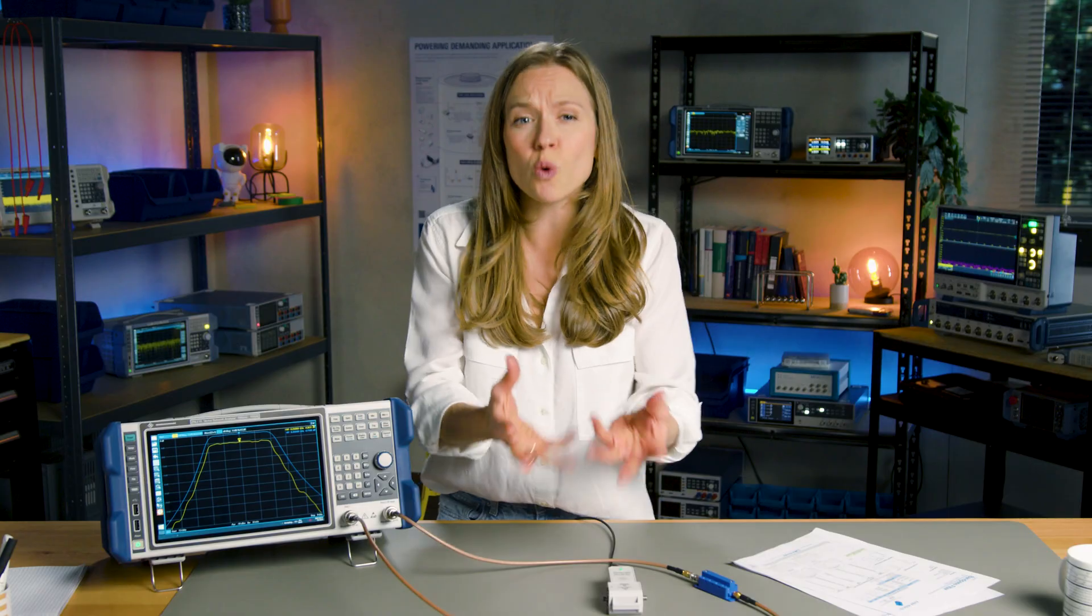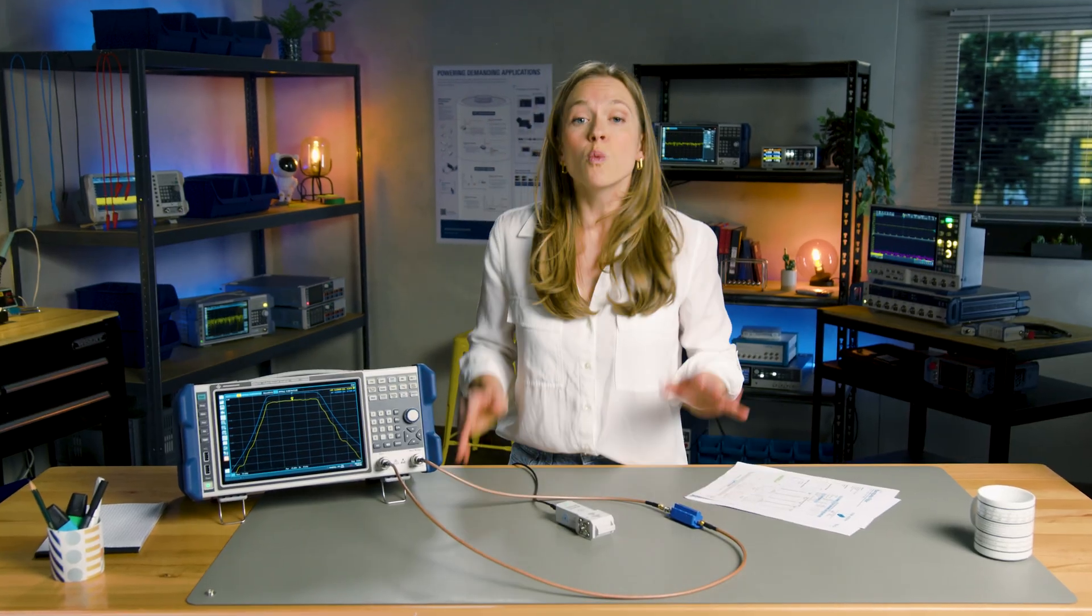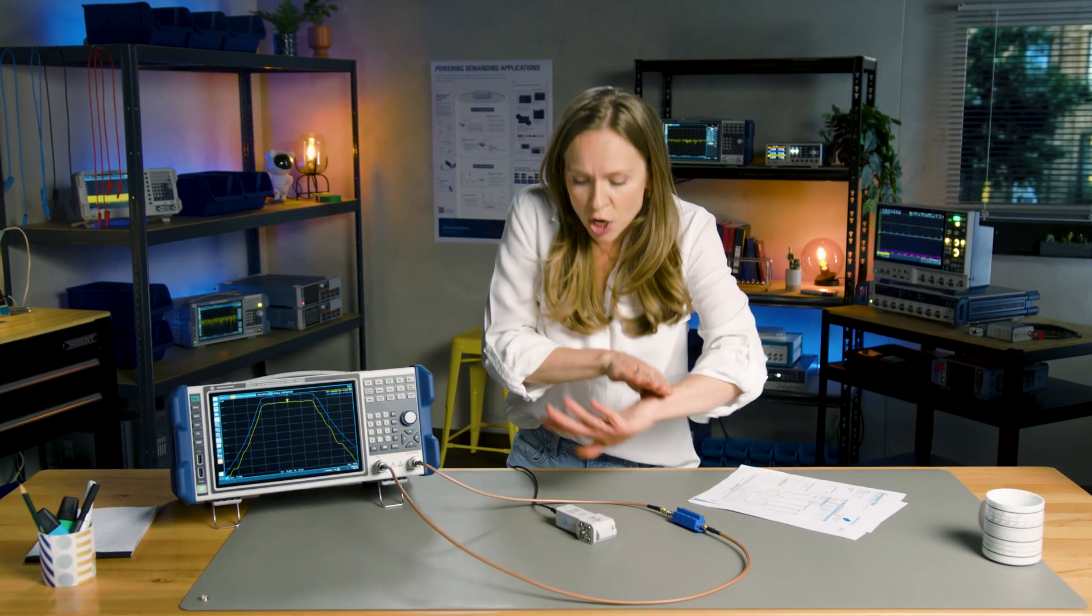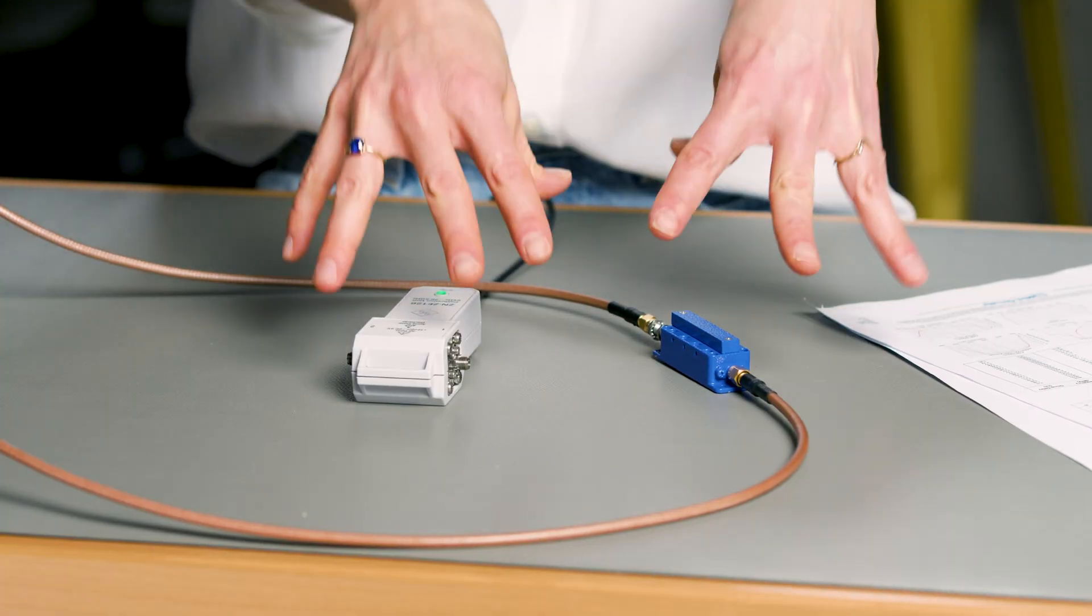A user calibration or system error correction is crucial to eliminate systematic errors within the measurement and remove unwanted effects of test cables and connectors to the DUT plane. Let's perform an automatic calibration.